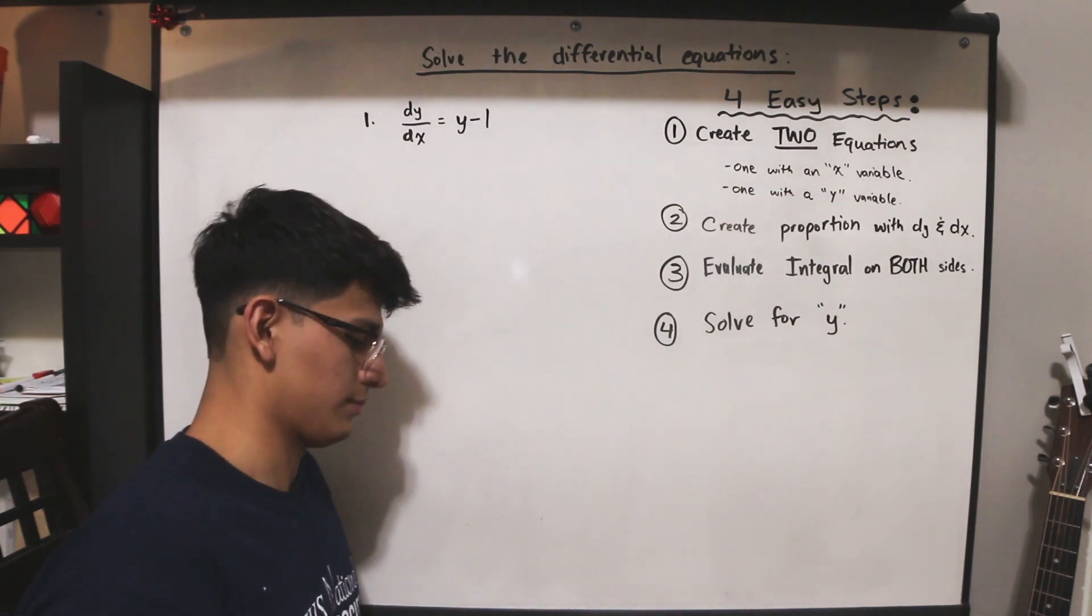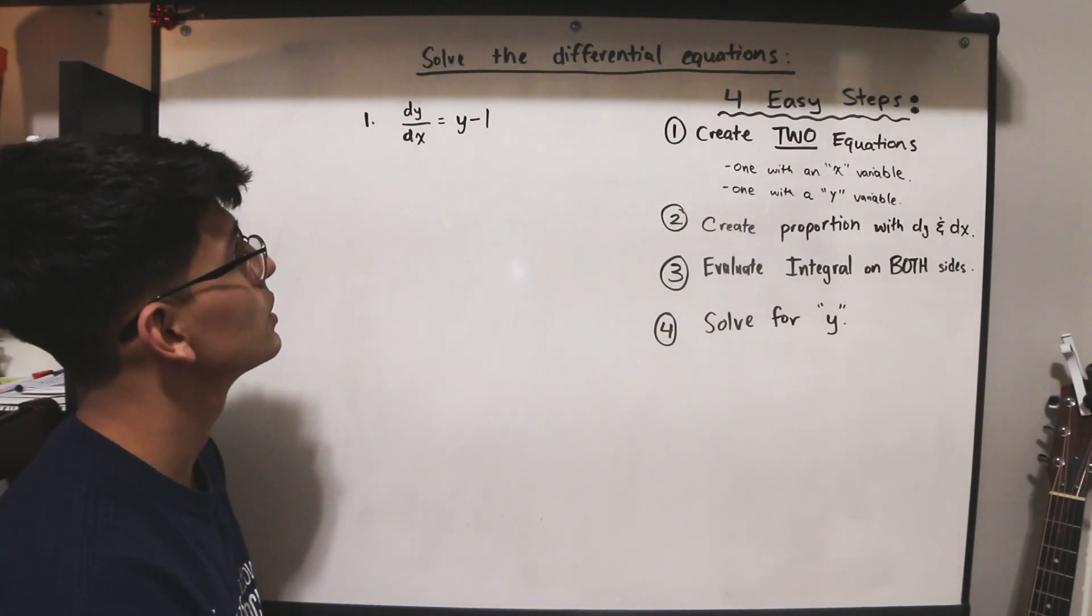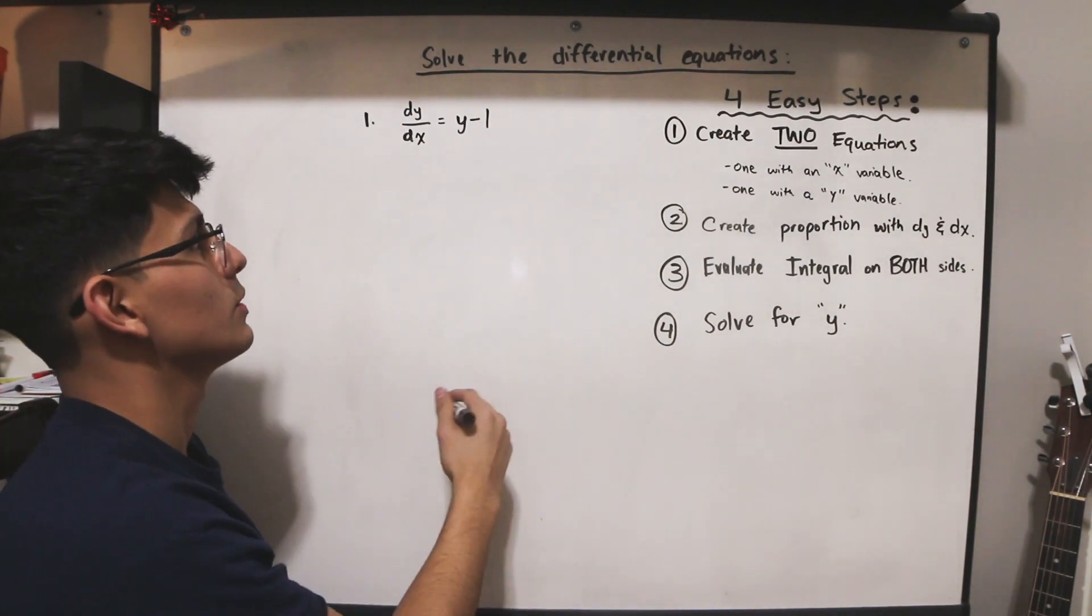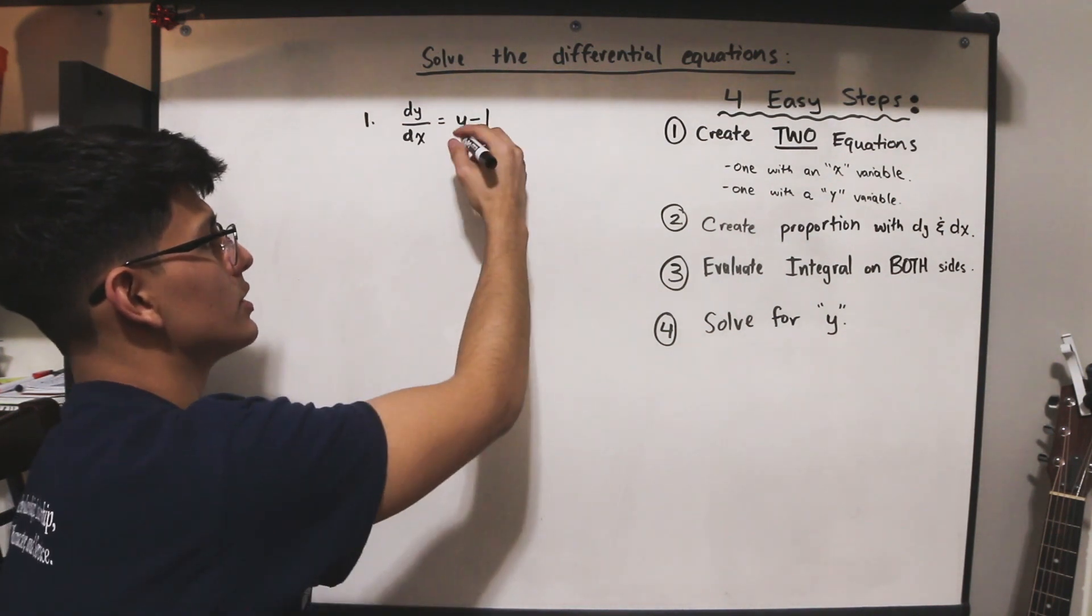This equation reads dy over dx equals y minus 1. So we're going to solve this differential equation. Our first step says to create two equations.